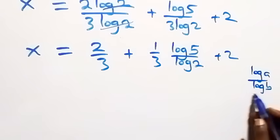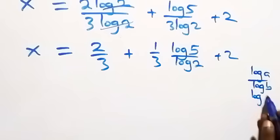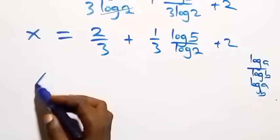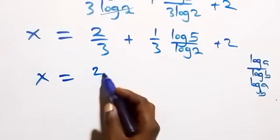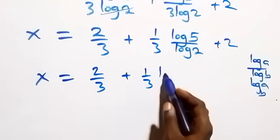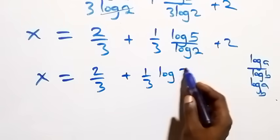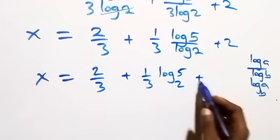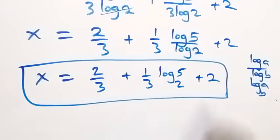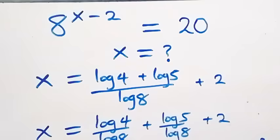We apply the change of base formula — log a over log b equals log a to base b — so x equals 2 over 3, plus 1 over 3 times log 5 base 2, plus 2. This is the value of x.